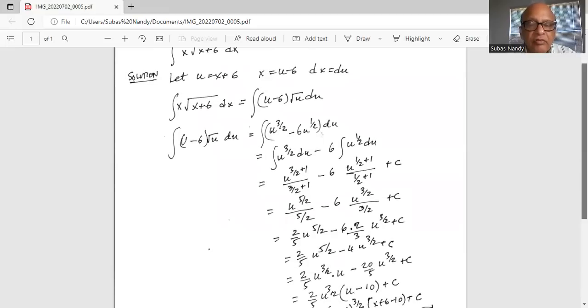So we have 2 over 5 u to the power of 5 by 2 minus 4 u to the power of 3 by 2 plus c.